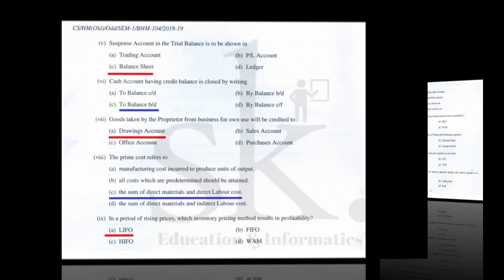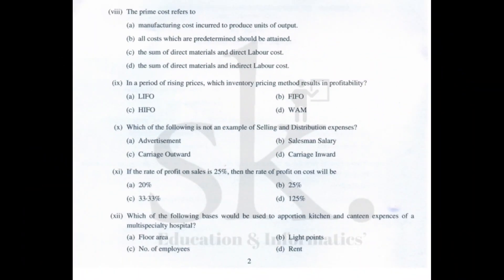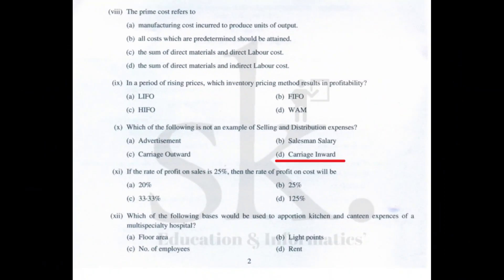Question number ten: which of the following is not an example of selling and distribution expenses — advertisement, carriage outward, and salesman's salary are all part of selling and distribution. Carriage inward is a part of direct expenses related to raw material, so it is not a selling and distribution expense. The correct option is D.